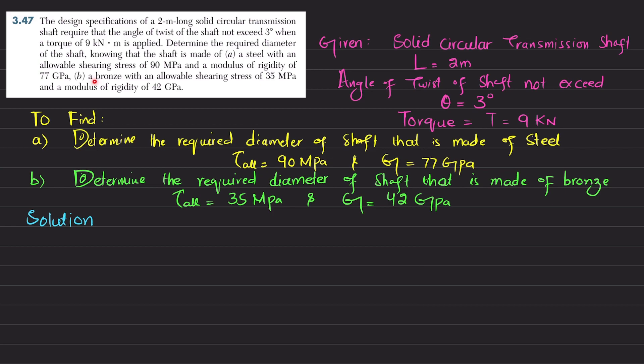And part B: determine the required diameter of the shaft made of bronze with allowable shearing stress of 35 MPa and modulus of rigidity 42 GPa.